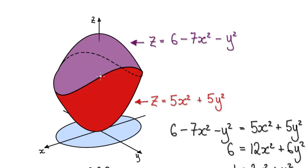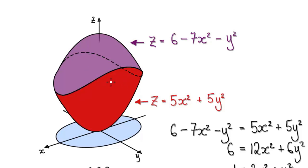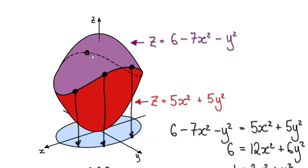So where the two surfaces intersect, it will be along here. If you look at where the two surfaces intersect and project it straight down onto the XY plane, it will eventually form an ellipse. So where the two surfaces intersect, project it straight down and it will form an ellipse. You can take any point along that intersection curve, project it straight down, and it will land on that ellipse.